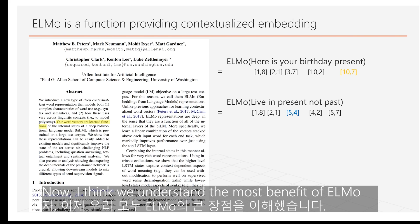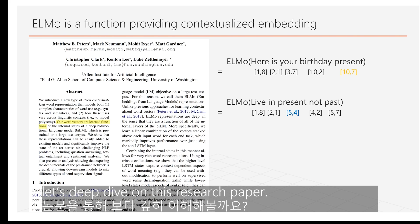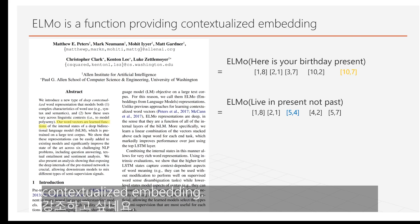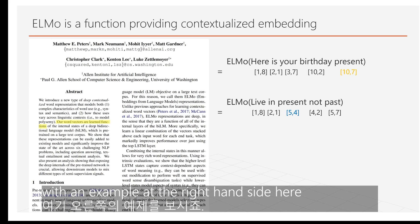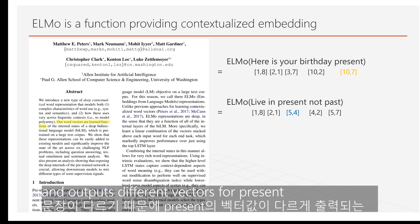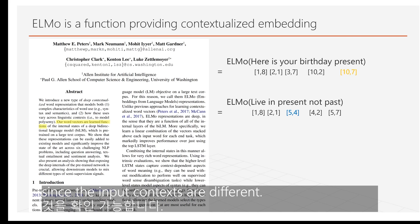Now let's deep dive into the ELMo research paper. ELMo is a function providing contextualized embeddings — you can see it as a function which takes context as input and outputs different embeddings for the word 'present' since the input contexts are different.